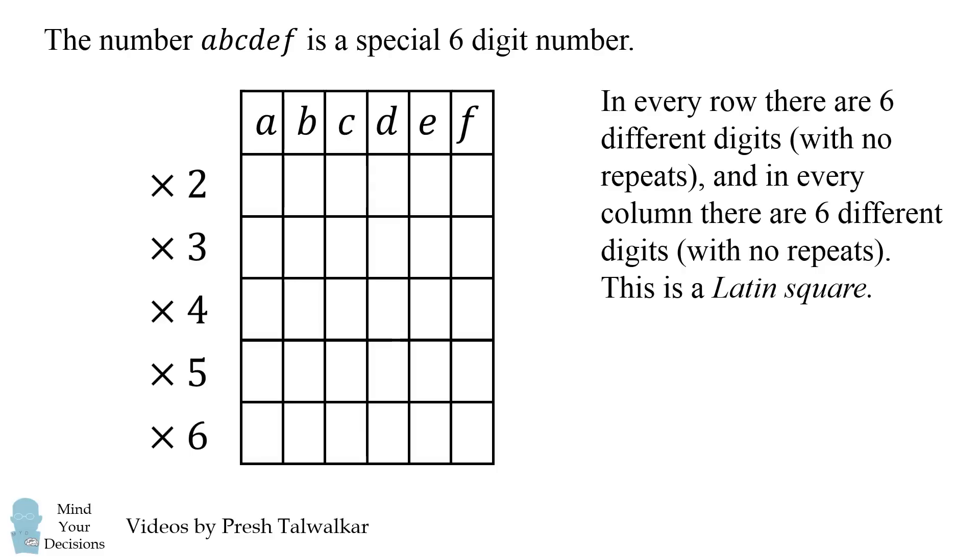And I should mention you're multiplying the entire number in each row. For example, if the six digit number is 123456, then row 2 would equal 246912. You're multiplying the entire number by 2, 3, 4, 5, and 6, not each individual digit in each column.